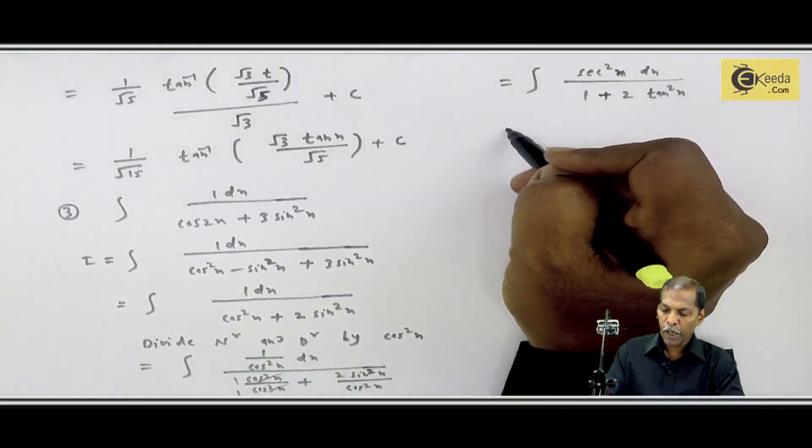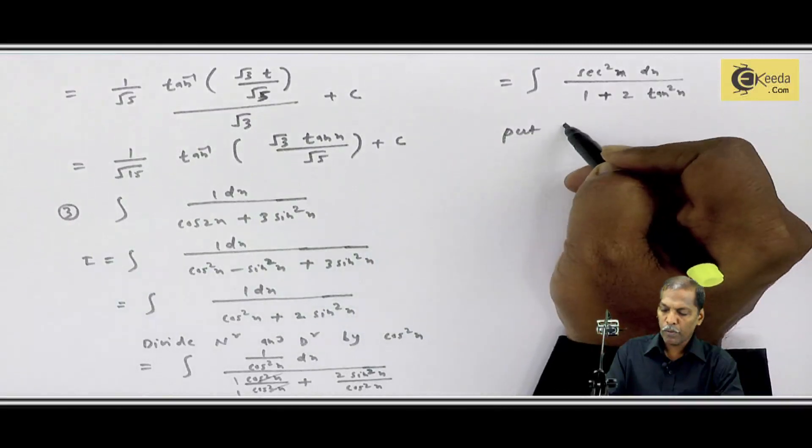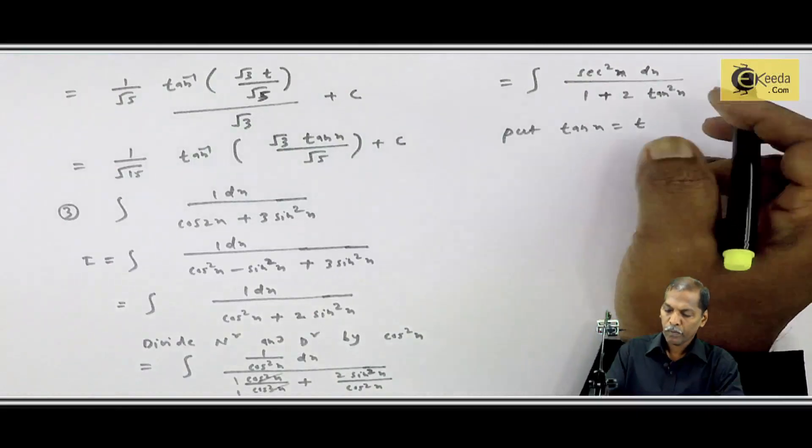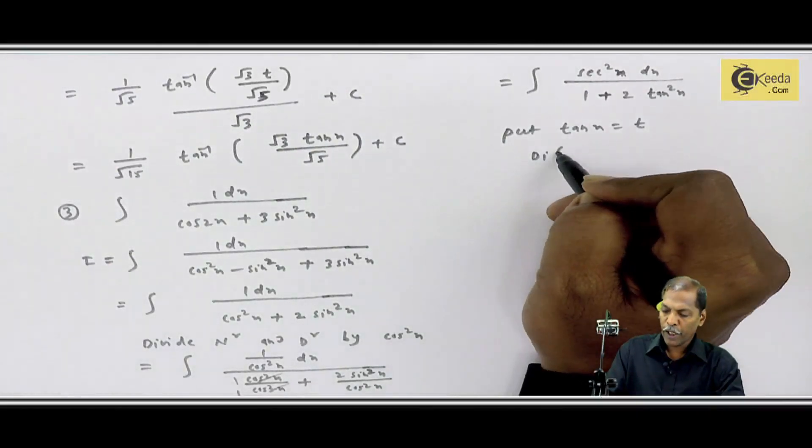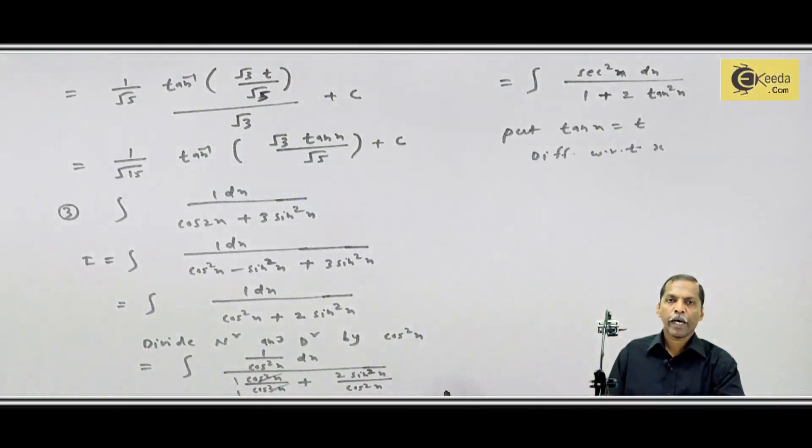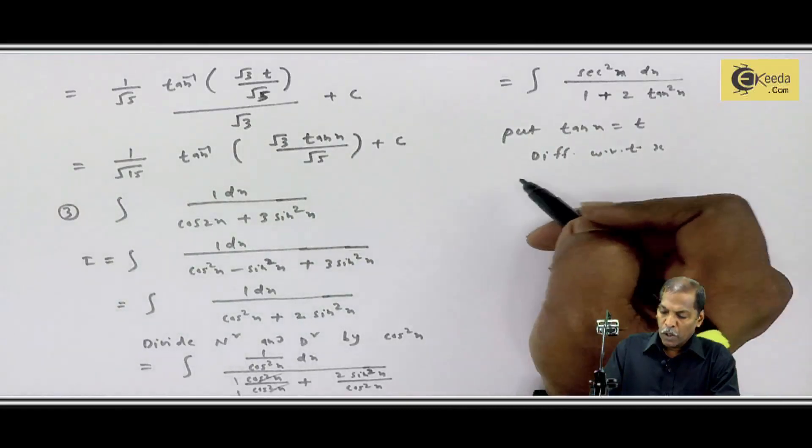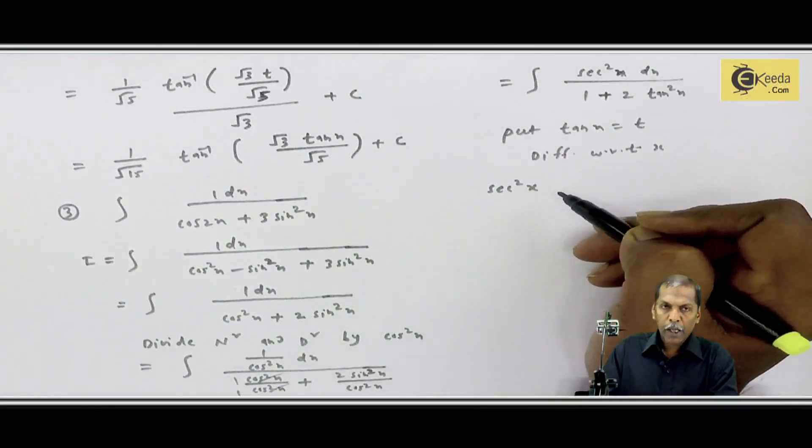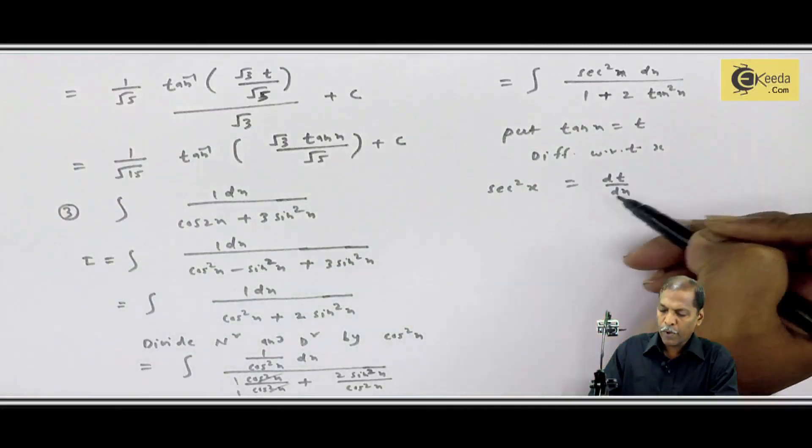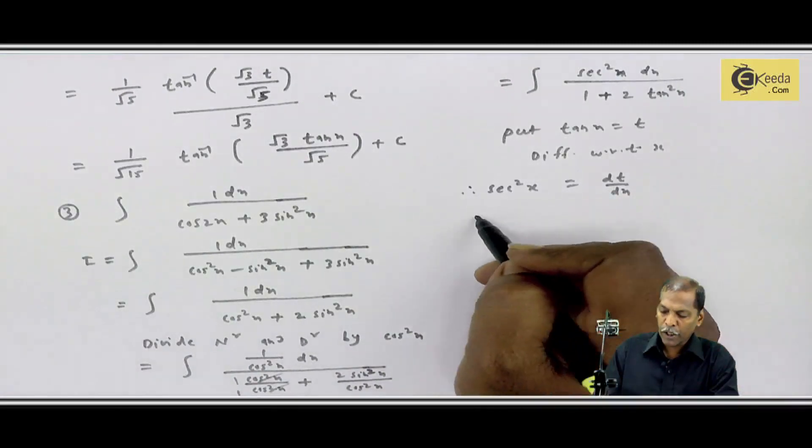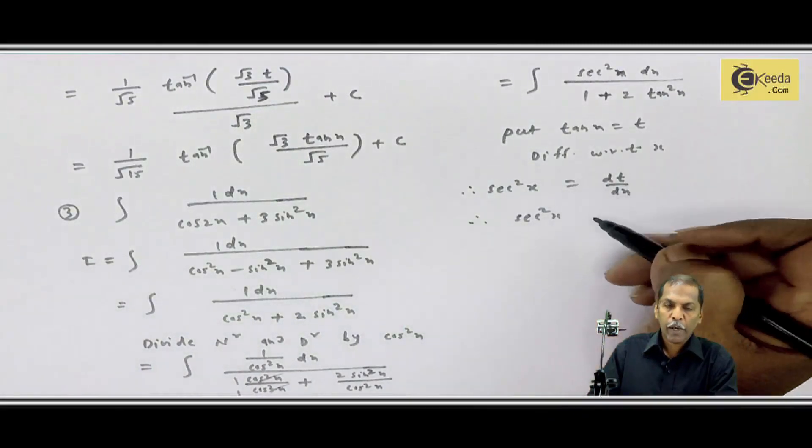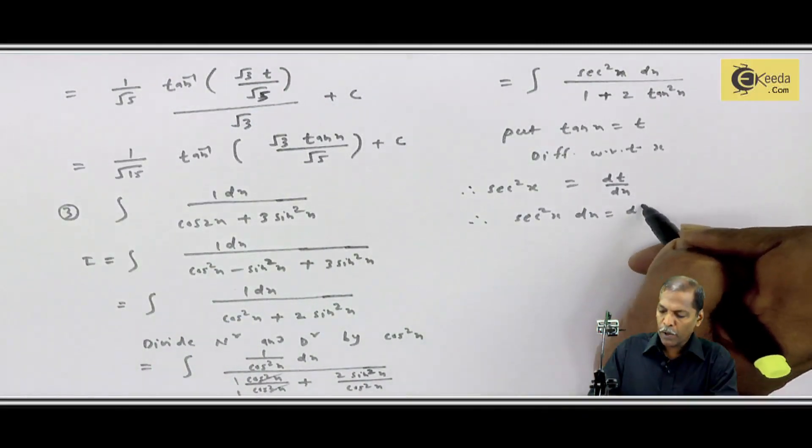What are the steps? Put tan x is equal to t. Differentiate with respect to x. Tan x derivative sec square x is equal to dt upon dx. So sec square x dx is equal to dt.